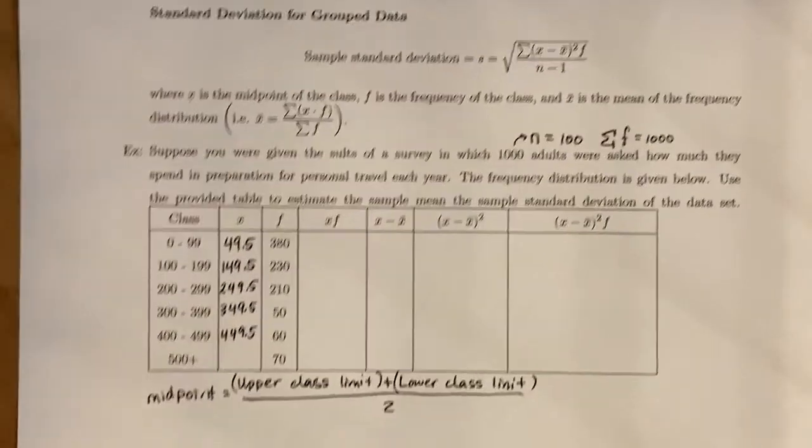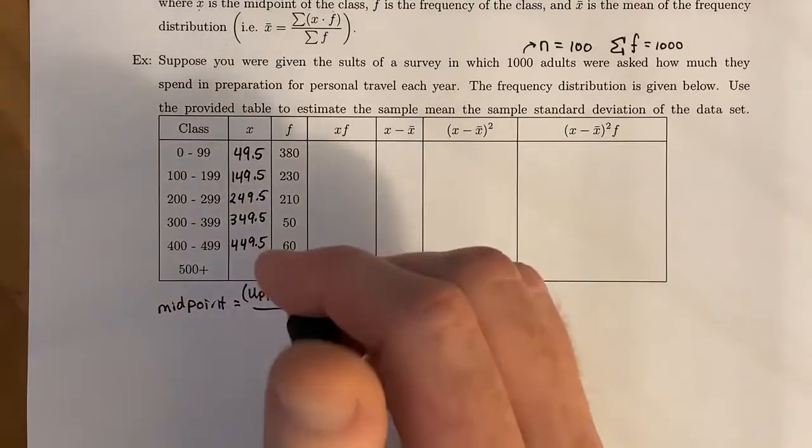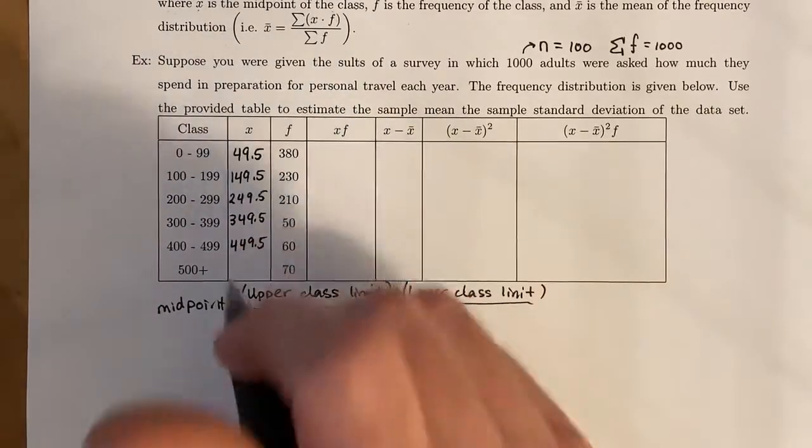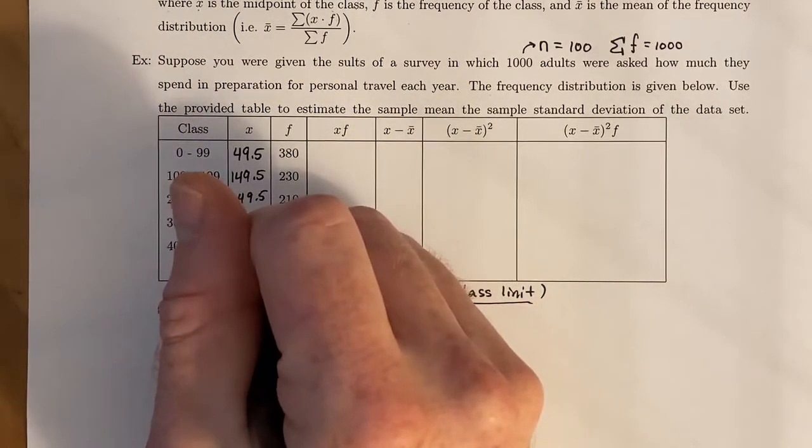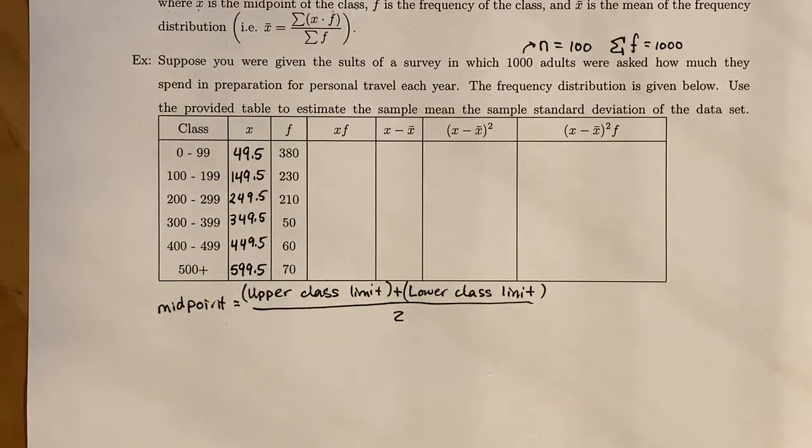Then we get to this 500 plus. Since this is an open-ended class, we have to make a choice. We're going to choose a midpoint that is within reason. Let's say 599.5 for that midpoint.